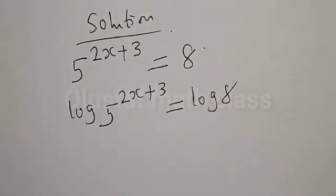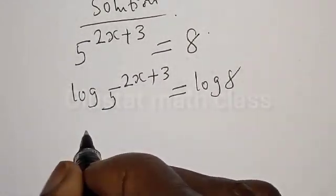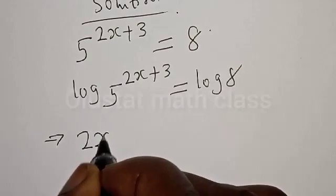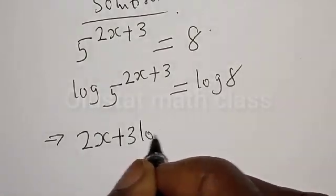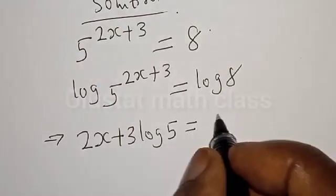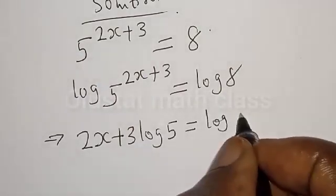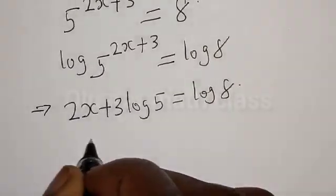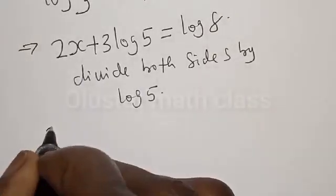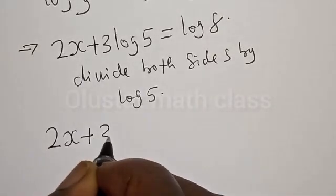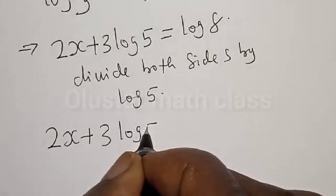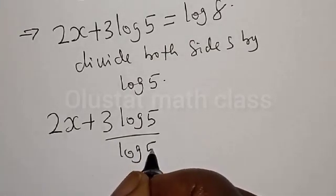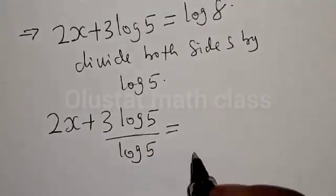This implies that we have 2s plus 3 log 5 is equal to log 8. Let's divide both sides by log 5. Then we have 2s plus 3 log 5 divided by log 5 is equal to log 8 divided by log 5.